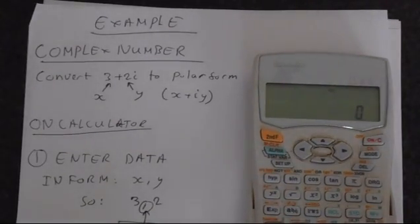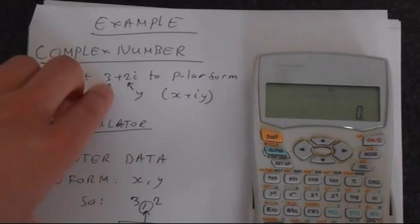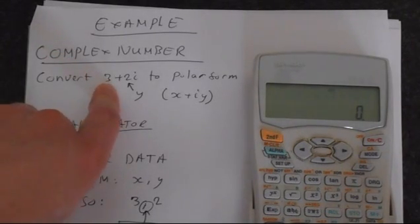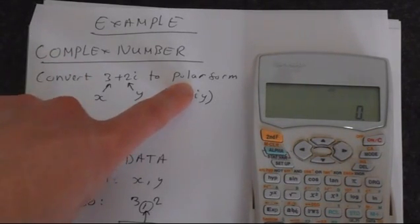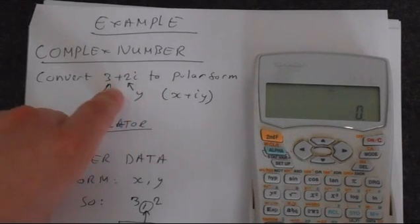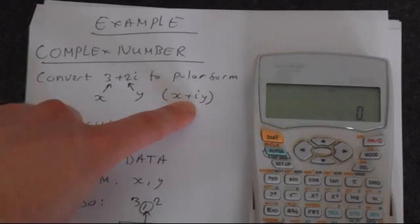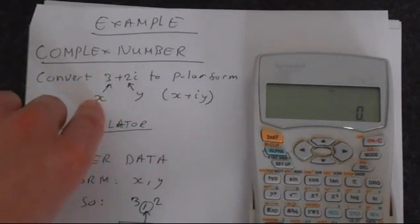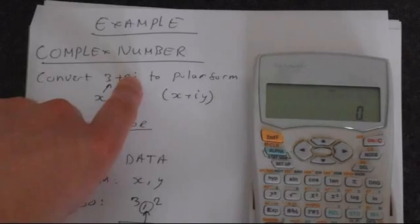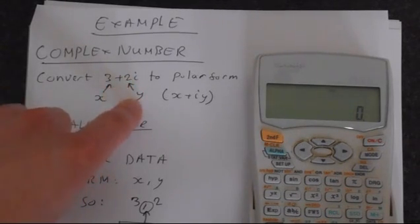So let's have a look at an example. We'll do this on the calculator so you can see how this works. We're taking 3 plus 2i and converting it to polar form. The standard form is x plus iy. This is how we write complex numbers in rectangular form. If you compare this and this, it's clear to see that the 3 is your x value and 2 is your y value.